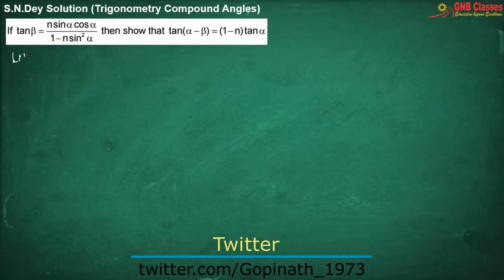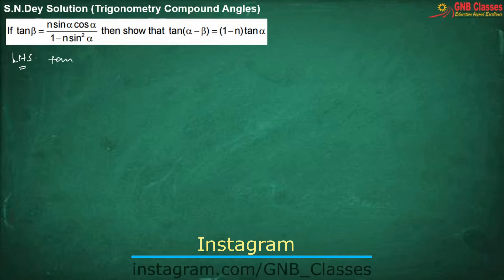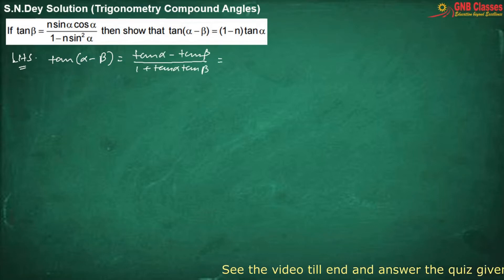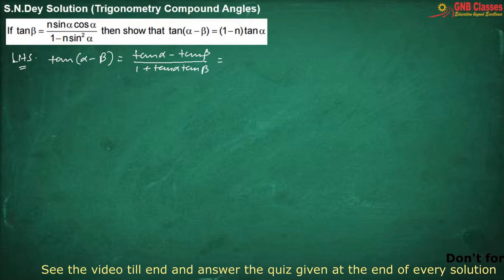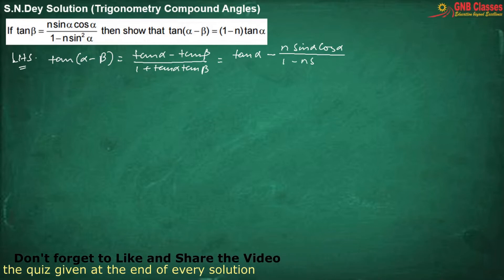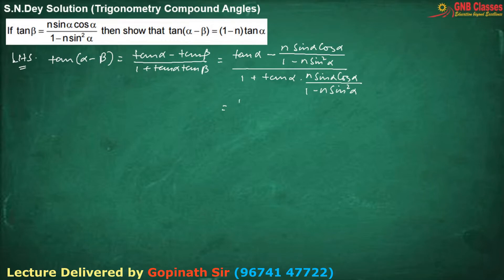Let me start from the left hand side, which is tan alpha minus beta. If we expand it using the tan A minus B formula, we are going to get an expression. Now we are replacing tan beta by the given expression. After taking LCM, we are going to get the numerator and the denominator.